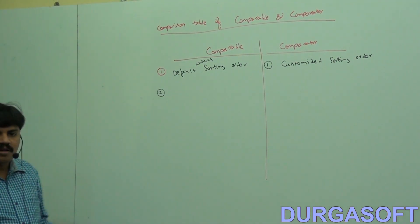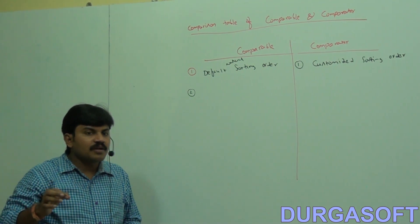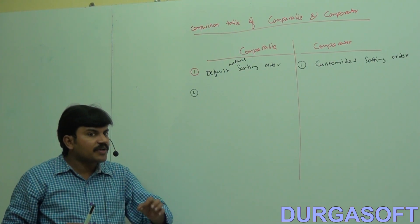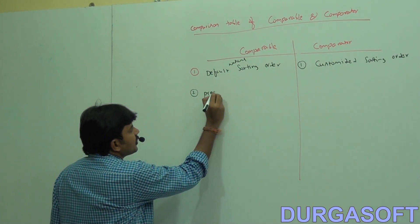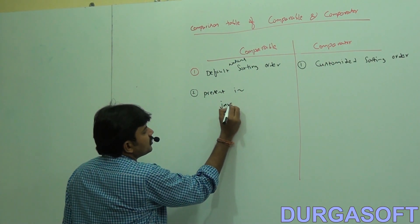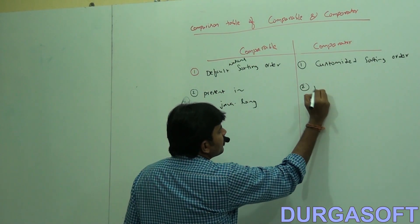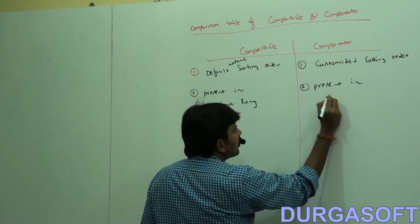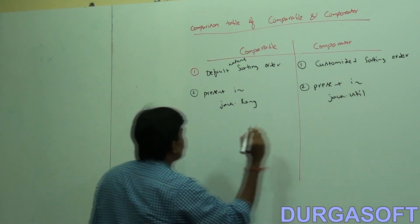The second point: which package is Comparable present in? It is in the java.lang package. Comparator is present in the java.util package. So Comparable is in java.lang, but Comparator is in java.util.